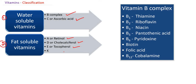Under water-soluble vitamins, the B-complex group includes B1, B2, B3, B5, and B6. Biotin is also called B7, folic acid is B9, and cobalamin is B12. You should know the name of each: B1 is thiamine, B2 is riboflavin, B3 is niacin, B5 is pantothenic acid, B6 is pyridoxine, B7 is biotin, B9 is folic acid, and B12 is cyanocobalamin or cobalamin.